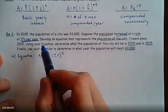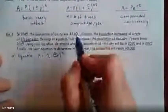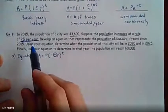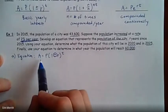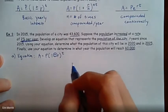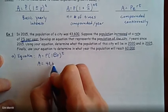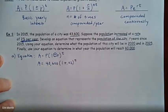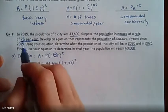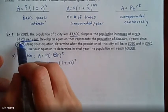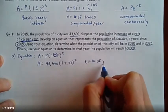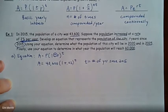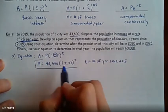So A equals P times 1 plus or minus R to the t power. The fact that it says we are increasing means we're going to use that plus. We're starting with 43,600. That's your principal value or initial value. Your 2%, that's your R. So 43,600 times 1 plus 0.02 raised to the t power. Now something to keep in mind, that 43,600 is in the year 2015. So the t value here represents the number of years since 2015.